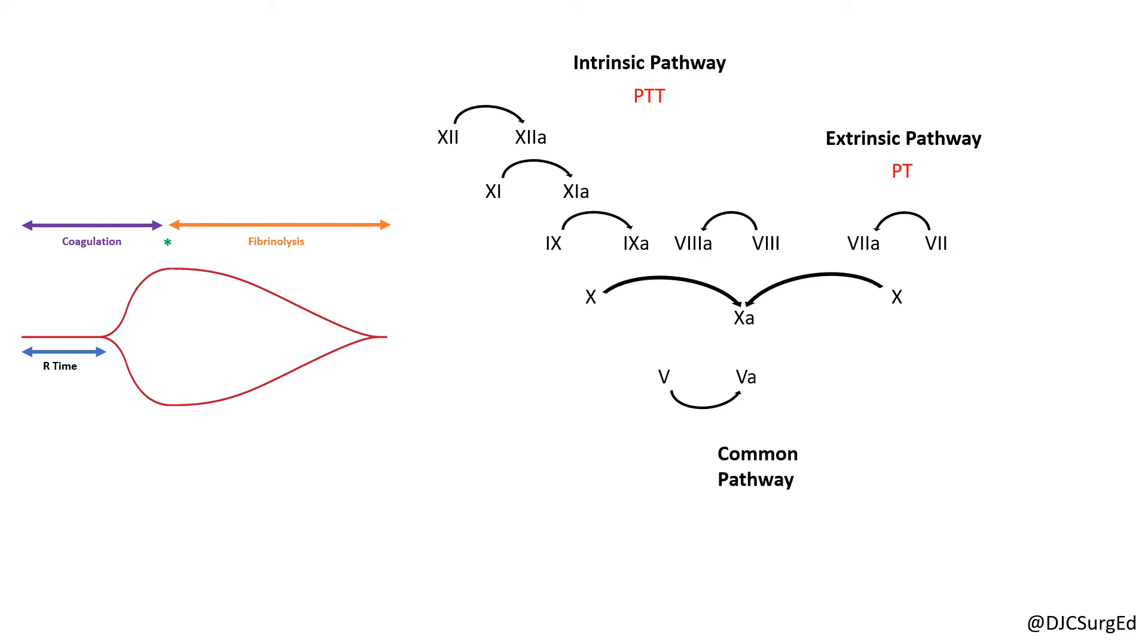And the common pathway, consisting of factors 10, 5, 2, or thrombin, and 13. Thrombin is essential for fibrin production and clot formation.